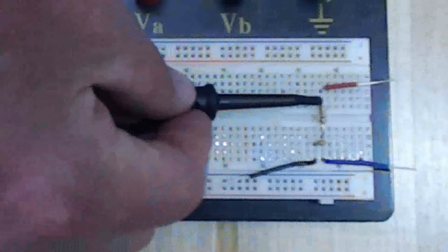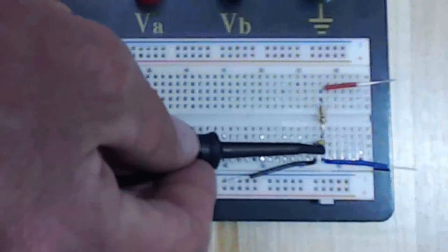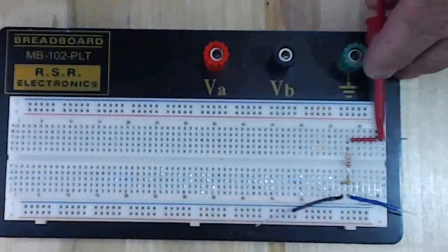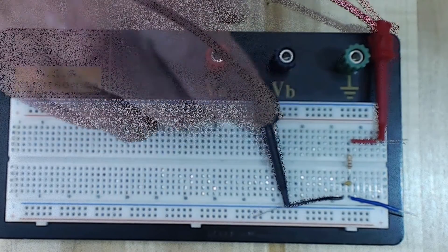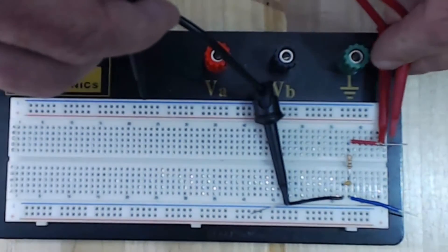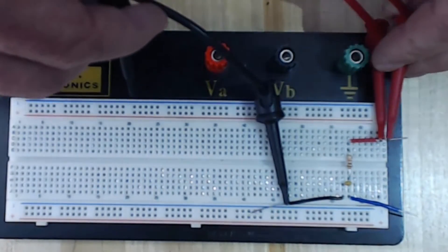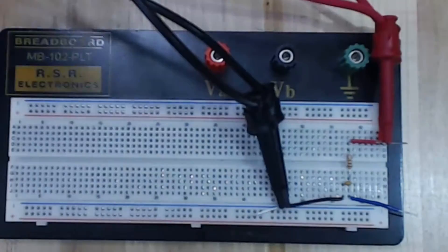I'm using a one kilo ohm resistor and a one nanofarad capacitor in series for this demonstration. I'll first connect the output of the function generator across the series combination. This will serve as an input for the circuit. I'll then connect channel one of the oscilloscope to the same points. This will give us a picture of our input on the oscilloscope.